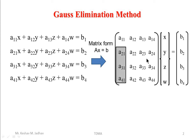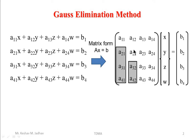Then we perform forward elimination. In the first step we convert all elements below the first pivot element to zero. In the second step we convert all elements below the second pivot element to zero, and so on. For four equations and four unknowns, we do forward elimination in three steps; for three equations, in two steps.